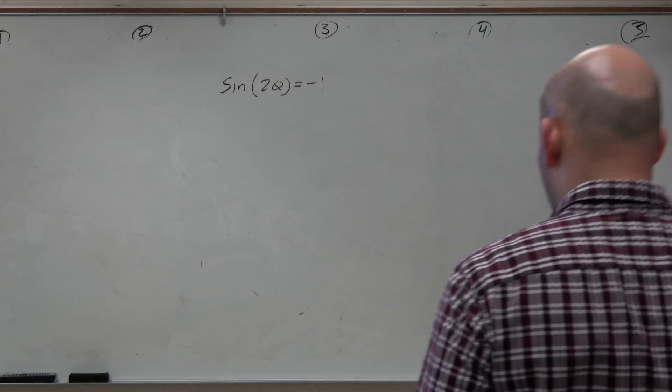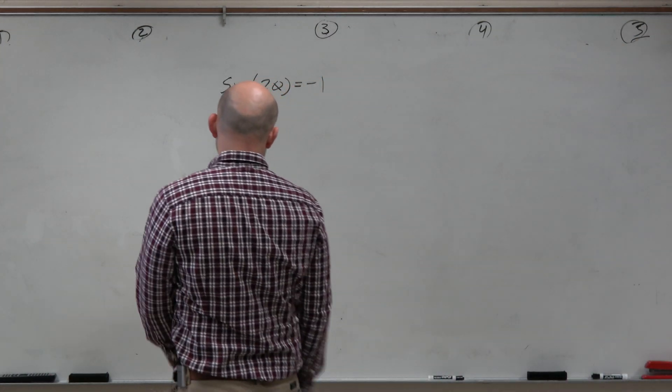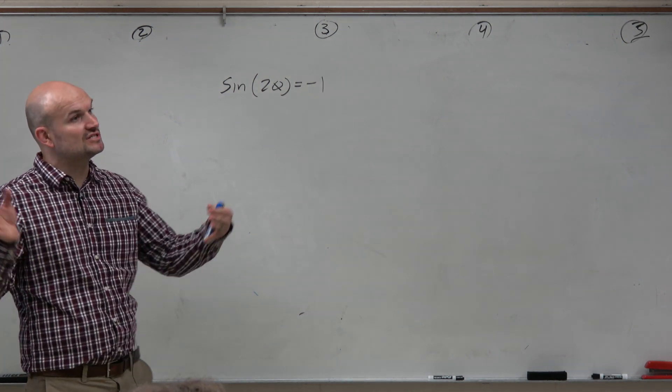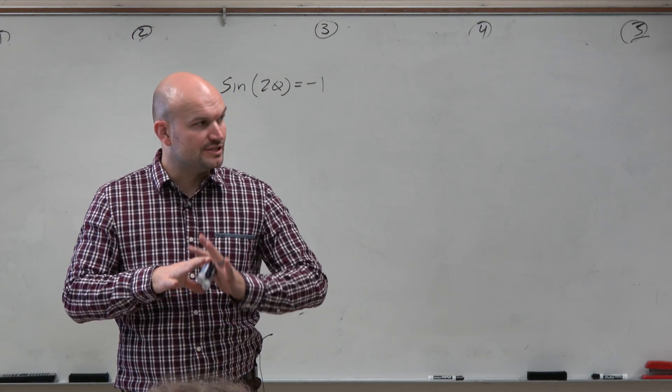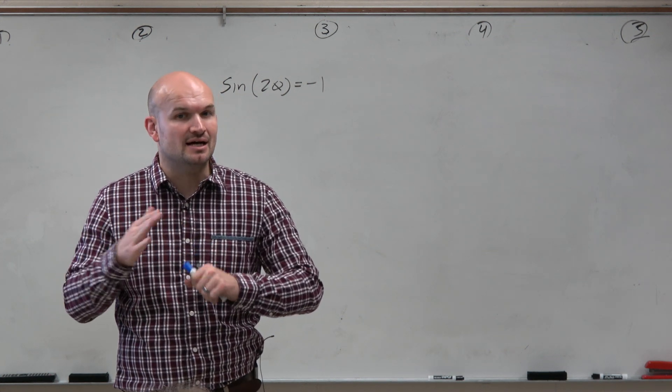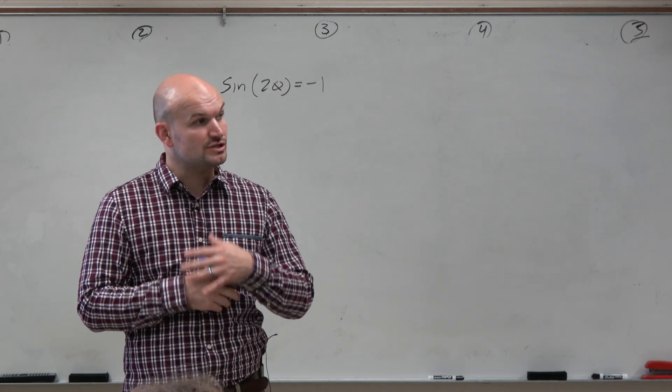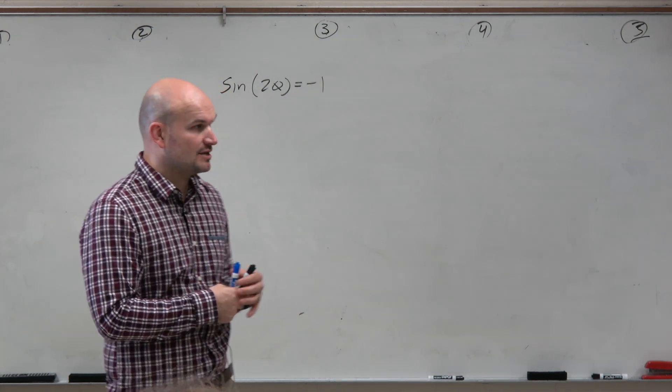We have sine of 2 theta equals negative 1. And as we already looked at in this graph, we know that this graph is going to be compressed. But the good news is, we don't need to worry about this 2 times theta until the very end. So what we're going to do is just treat this as a regular problem.